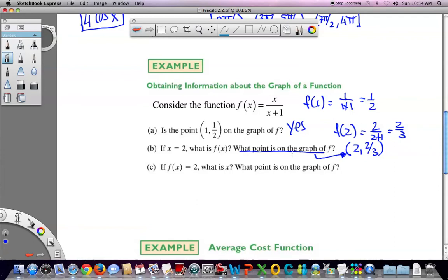If f of x is two, so that's the y value, then what is x? I can write this. Two is x divided by x plus one. Let's solve that. We're going to cross multiply here. And that means that I get 2x + 2 is equal to x. This needs to be here. So I'm going to take away x. So that leaves me with an x. So x is negative two.